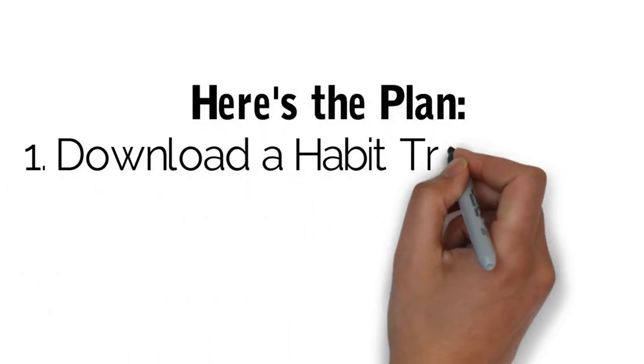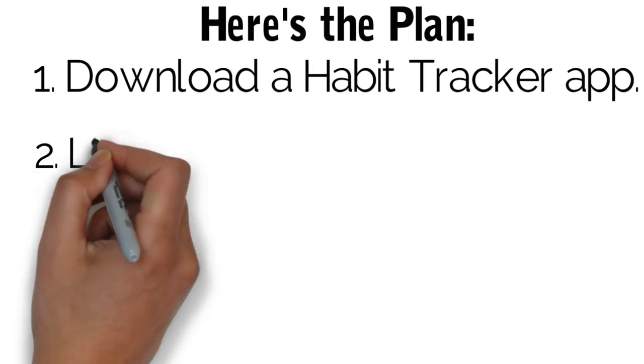Number one, download a habit tracker app in your phone, in your computer, whatever. You can just track on the journal, but most effective is habit tracker app. It gives you notifications. So download anything, Habit RPG, Habitica, and then move on to step number two.